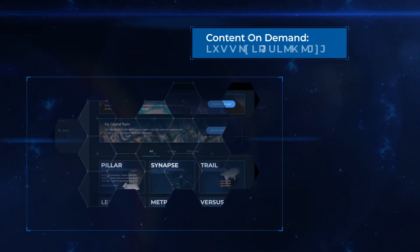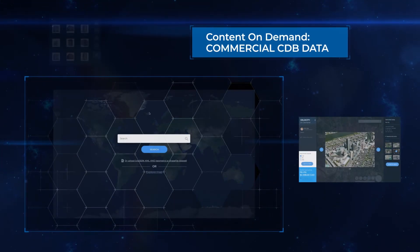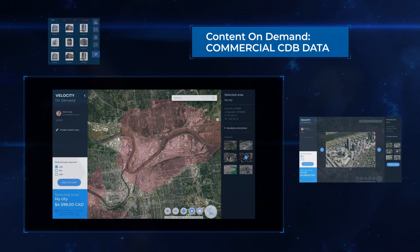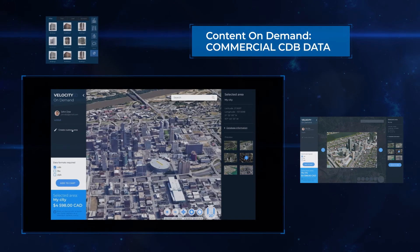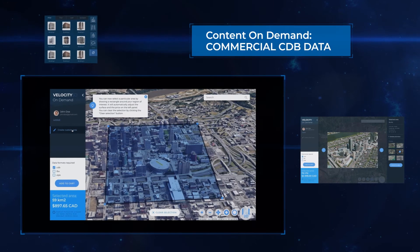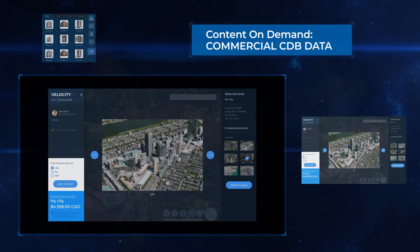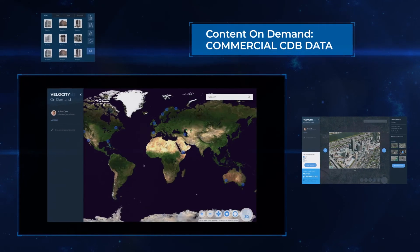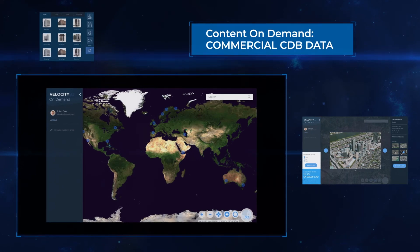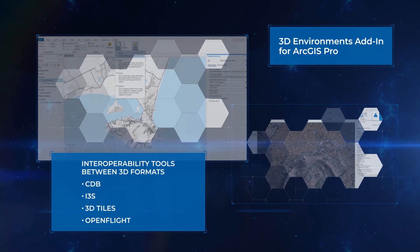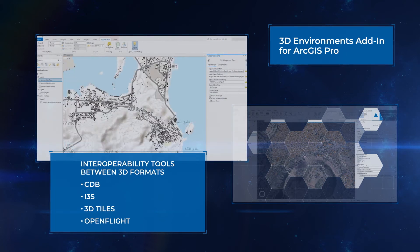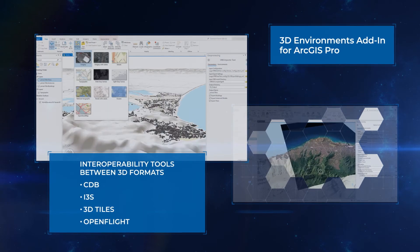With Presagius Content on Demand, users can access our web-based platform to select, customize and download content — including terrain, buildings, models, textures and materials — for immediate use in their projects.